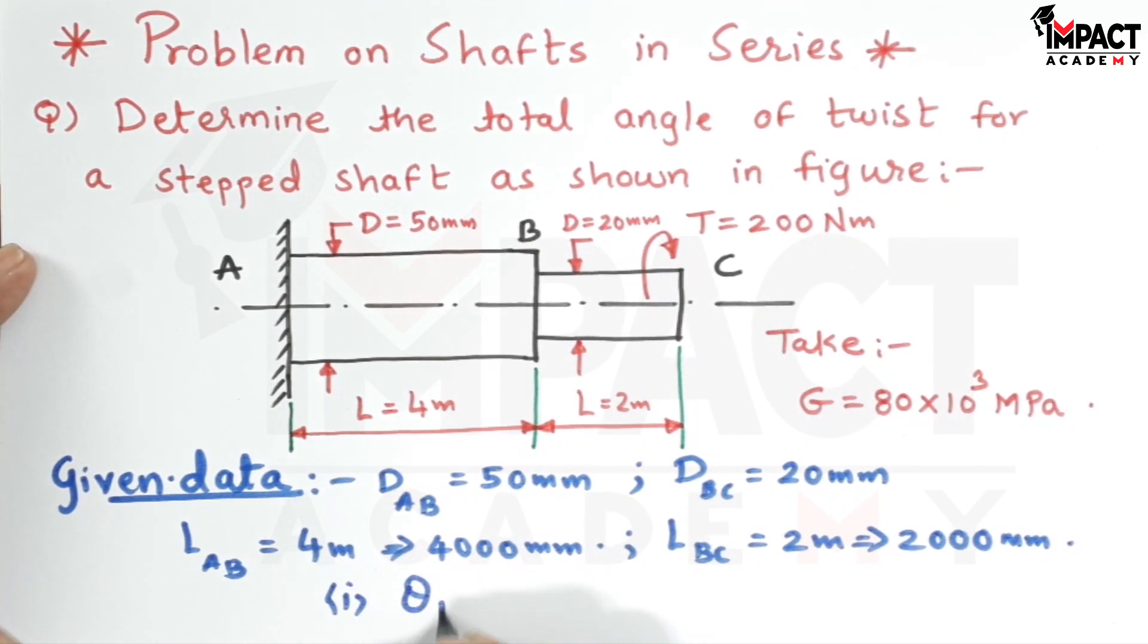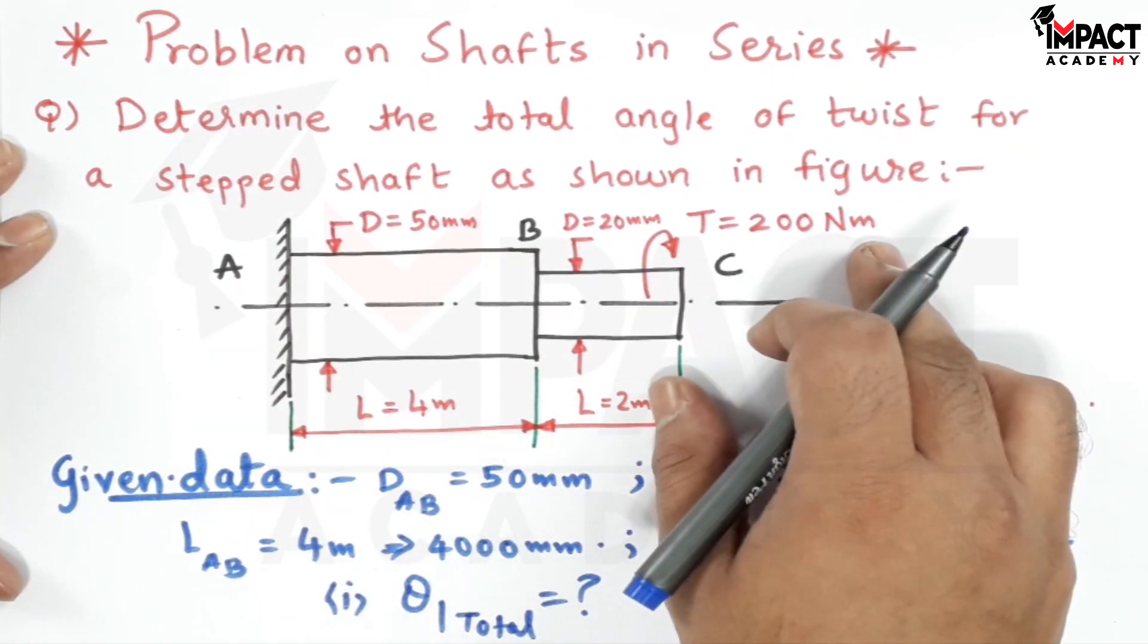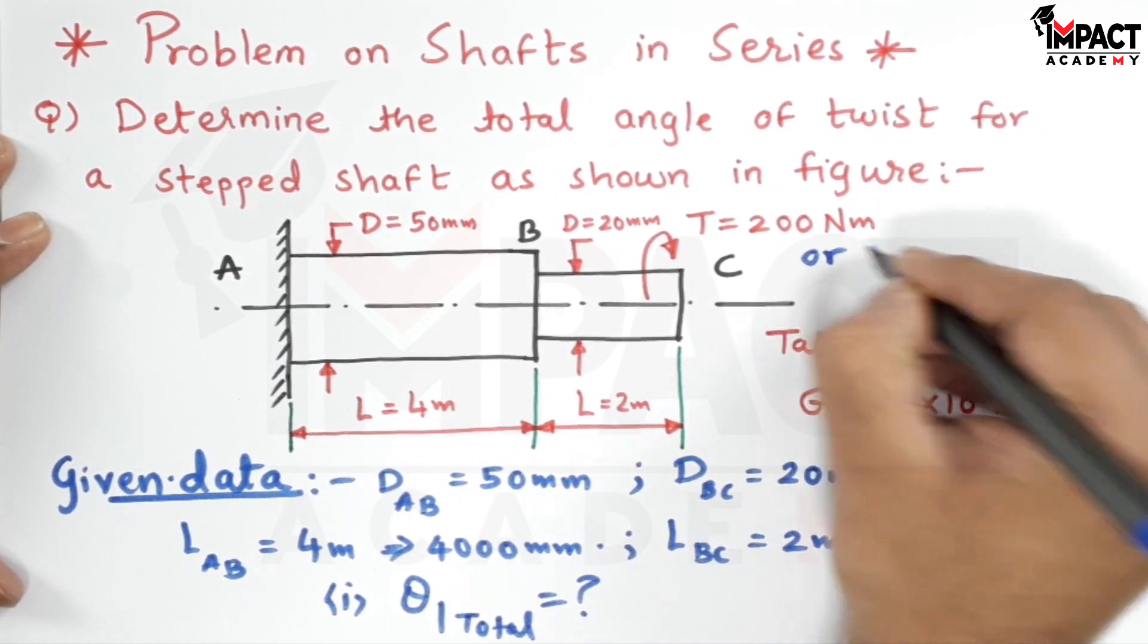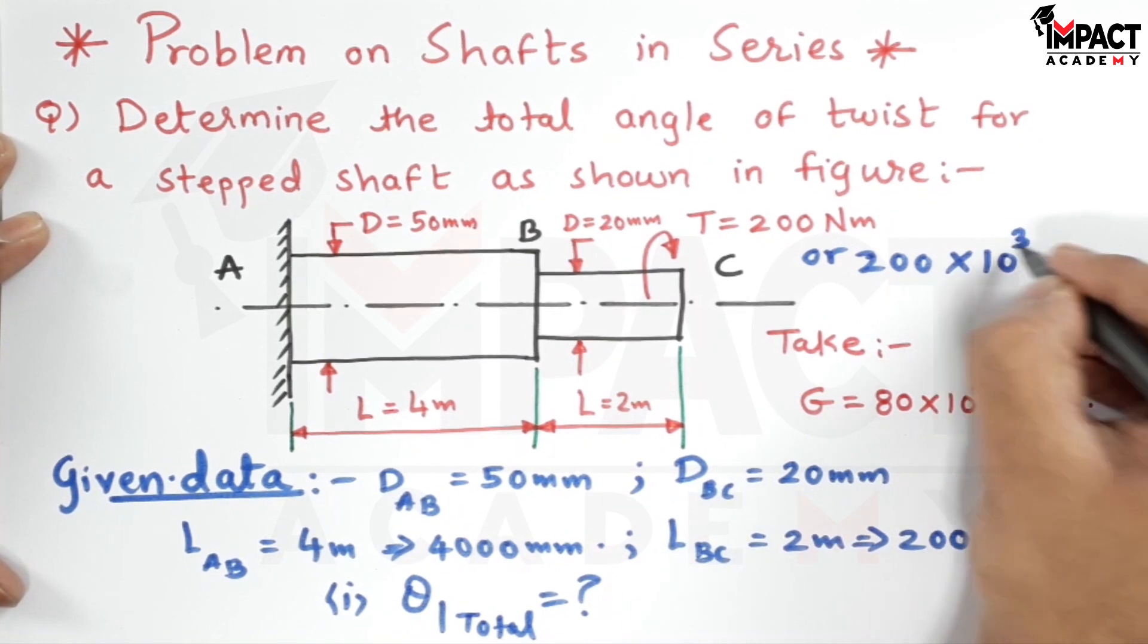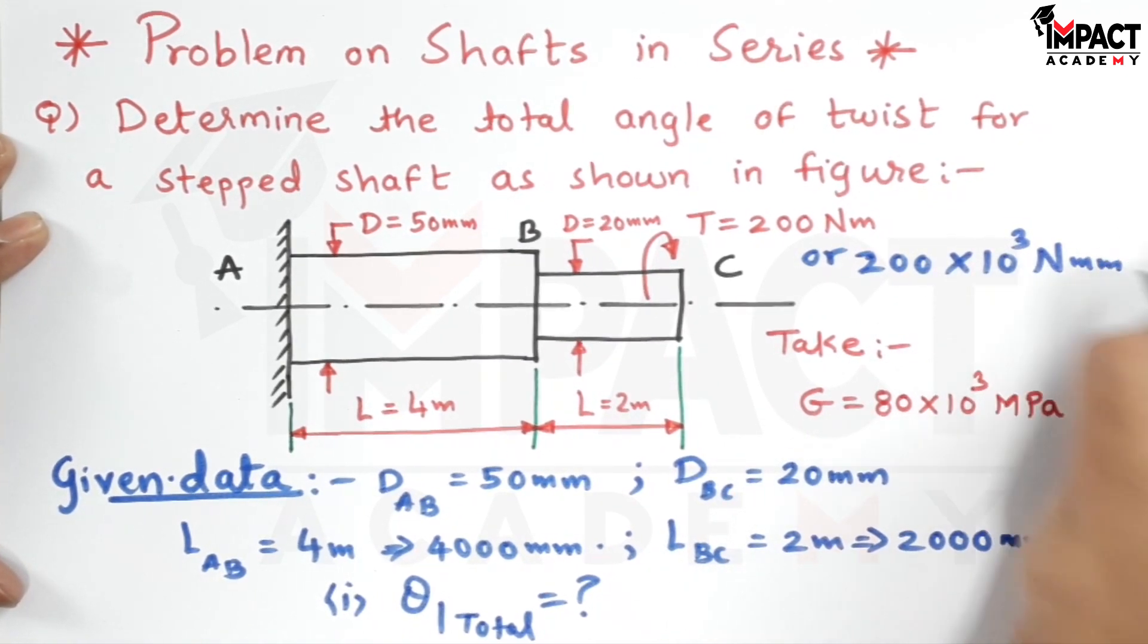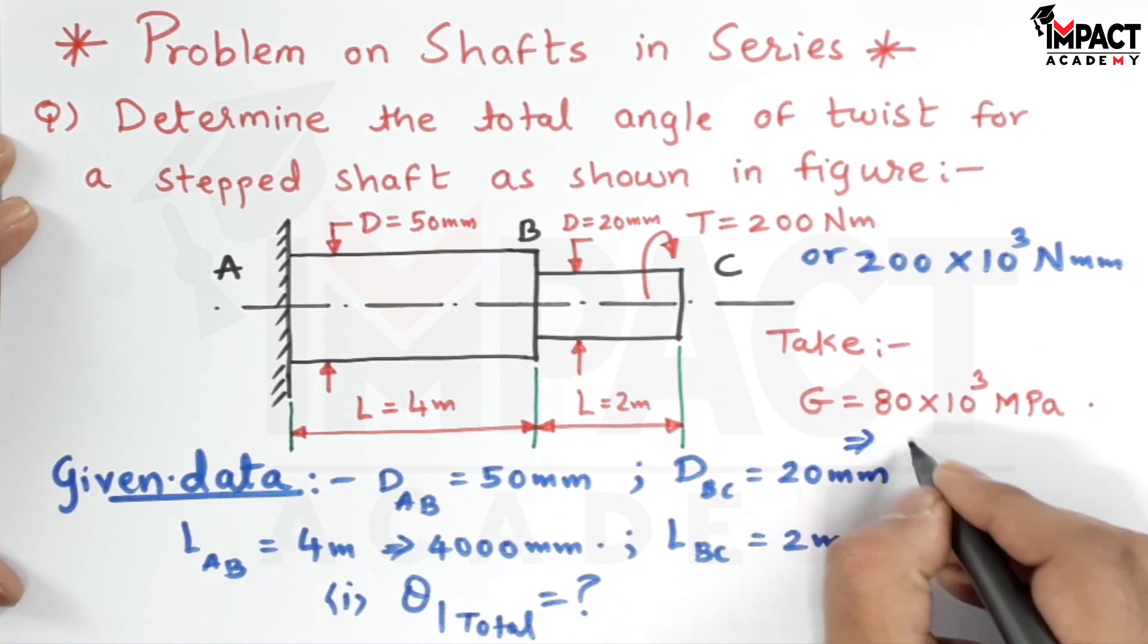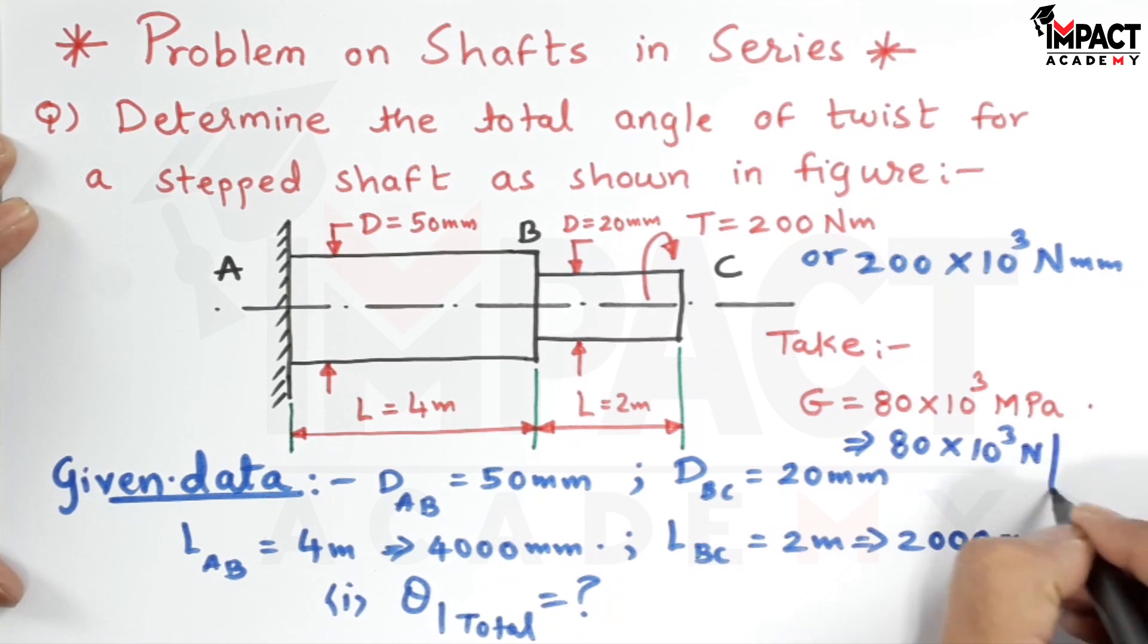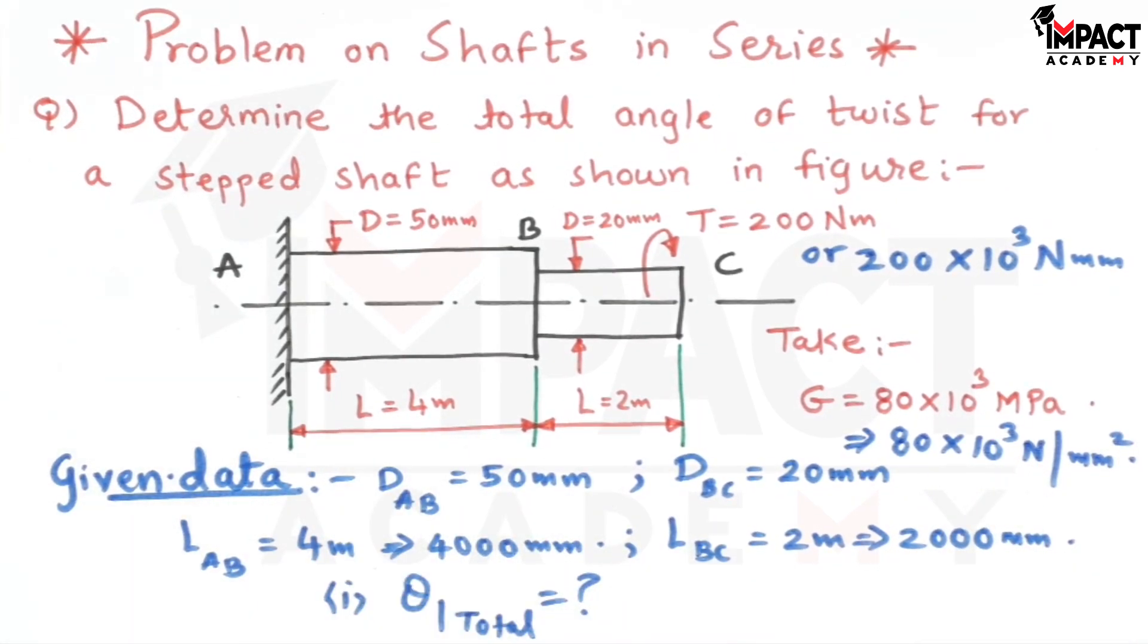We have to find the total angle of twist θ_total. The torque is 200 Nm, which I'll convert to 200×10³ N·mm. The G value is 80×10³ MPa, which is 80×10³ N/mm².